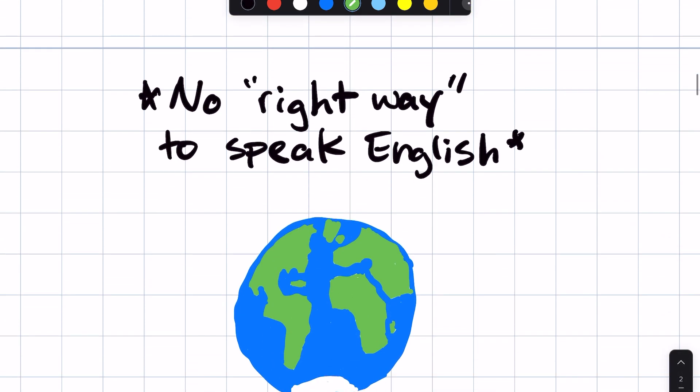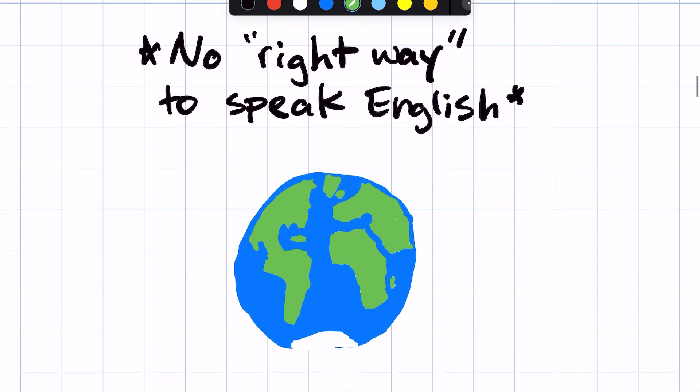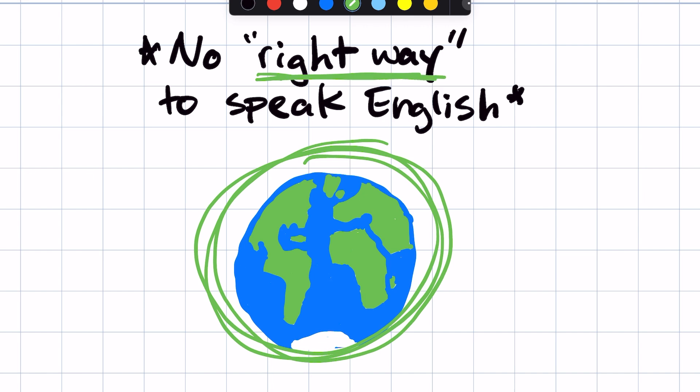And so one of the main things you also have to understand is that around the world, there are many ways to speak English. There is no right way. And when I say right way, I mean there is no right accent or right way to pronounce a word or sentence. And so there are many countries where they have different sounds in English. They have different dialects and different slang words.